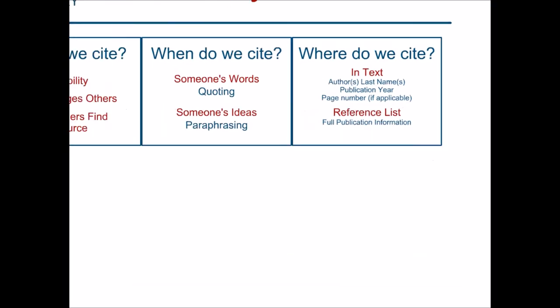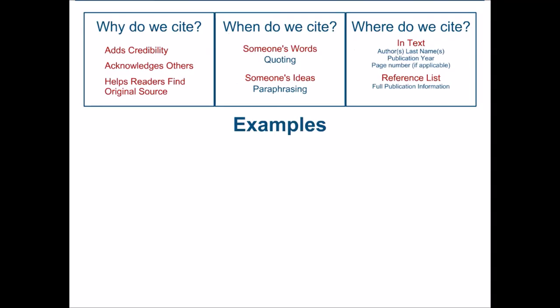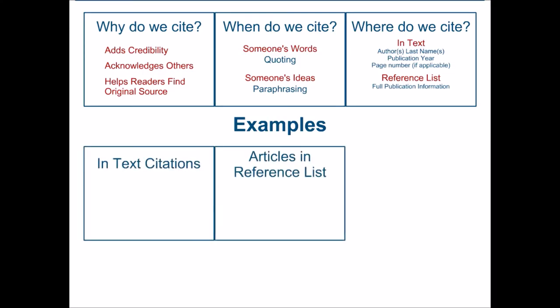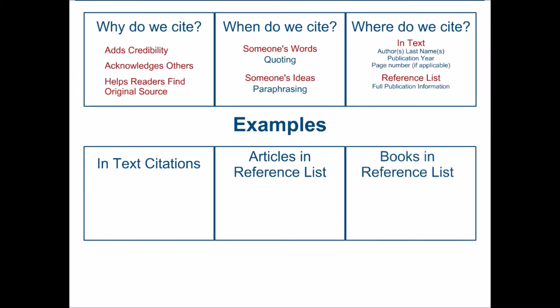Next, we'll look at some examples of APA citations and explain them. Just remember that the definitive source for citation is the APA style manual, which is available in the library. The examples we'll be looking at include in-text citations, articles in a reference list, and books in a reference list.